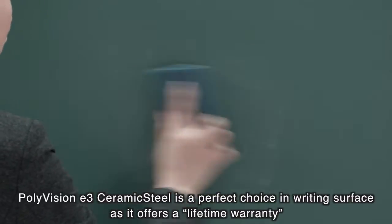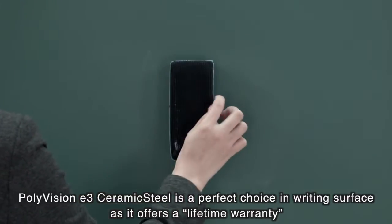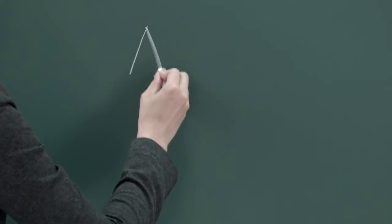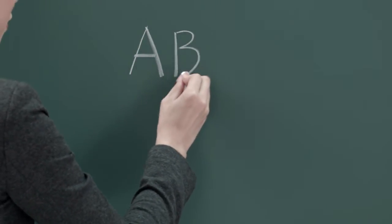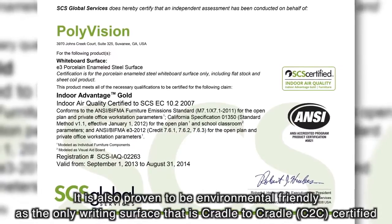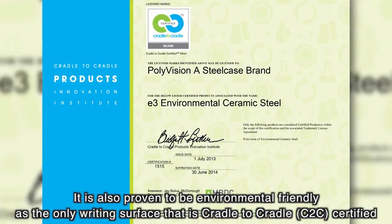PolyVision e³ CeramicSteel is a perfect choice in writing surface as it offers a lifetime warranty. It is also proven to be environmentally friendly as the only writing surface that is Cradle-to-Cradle certified.